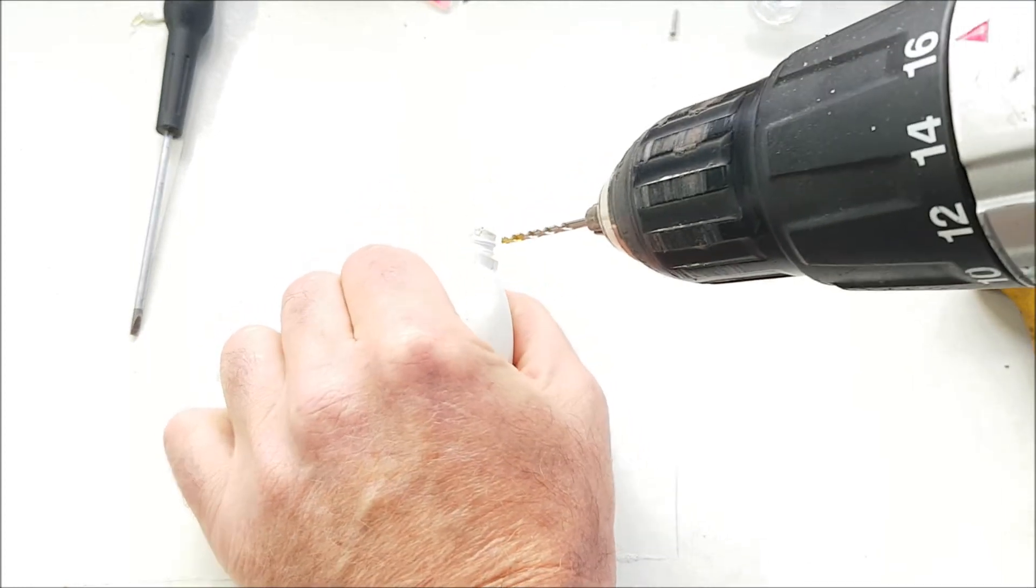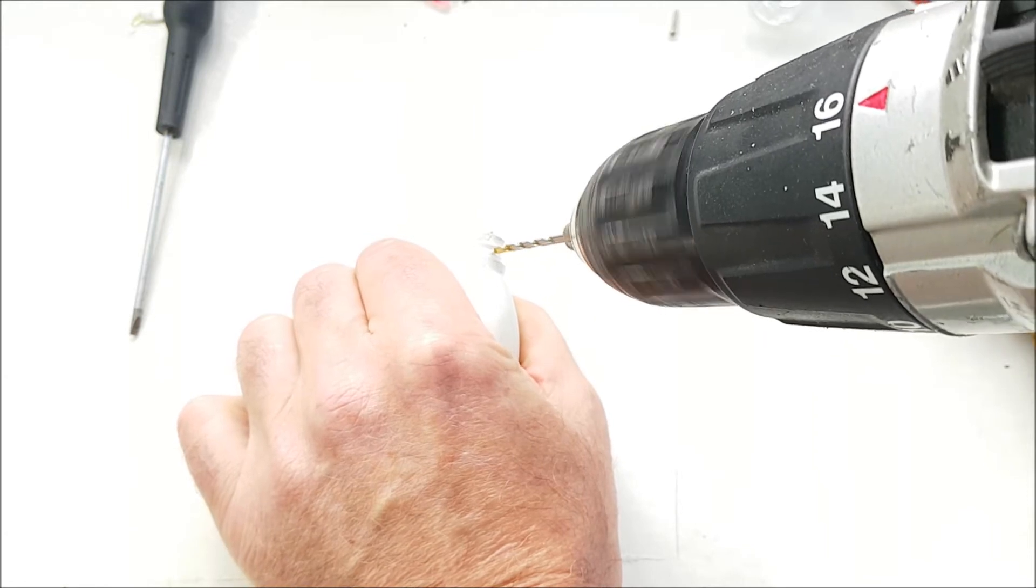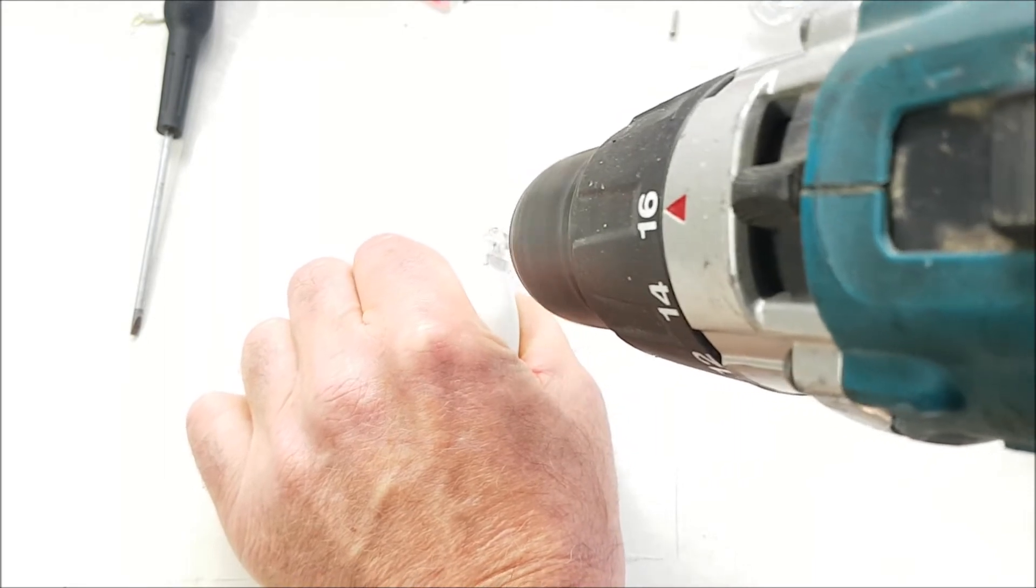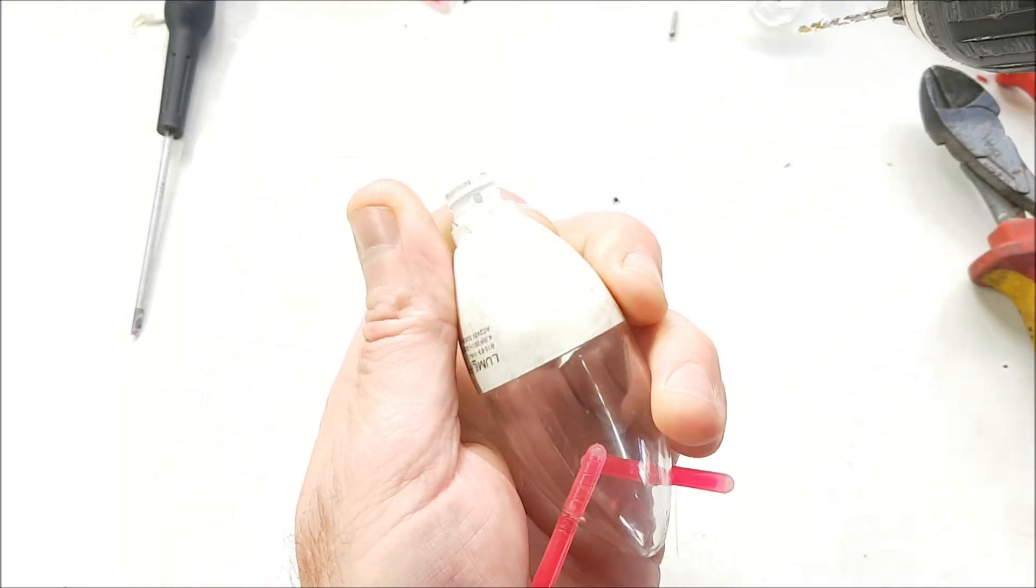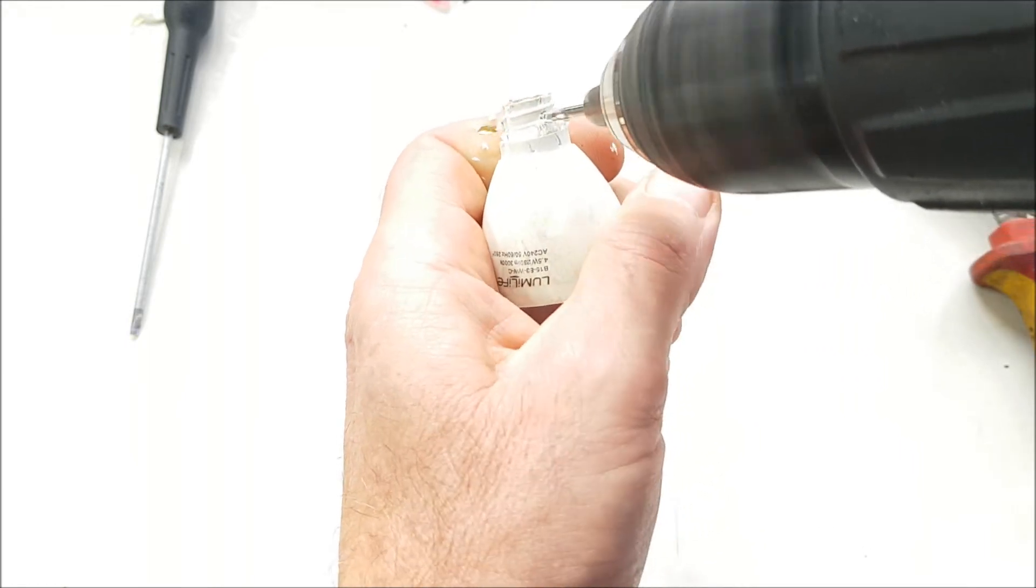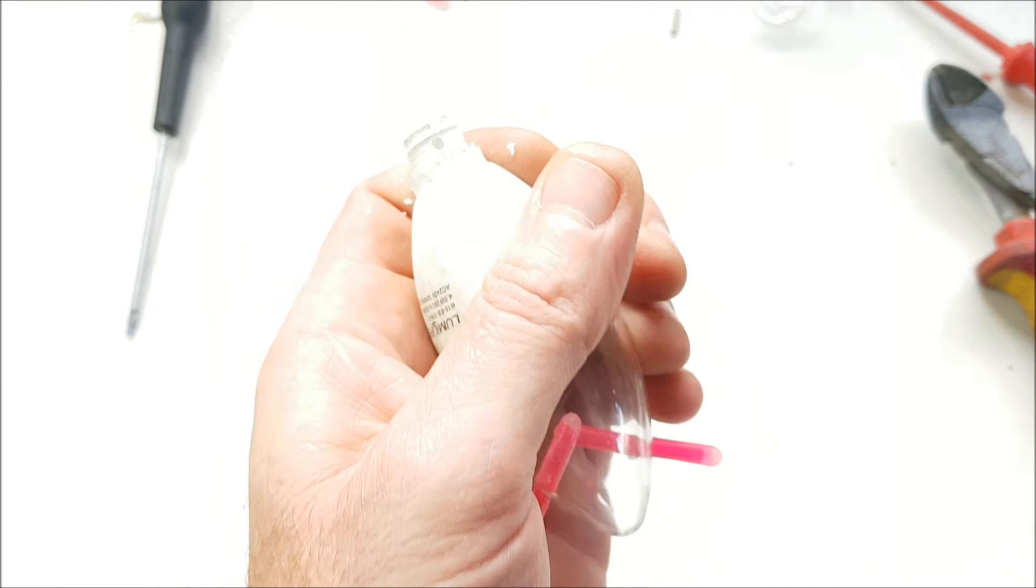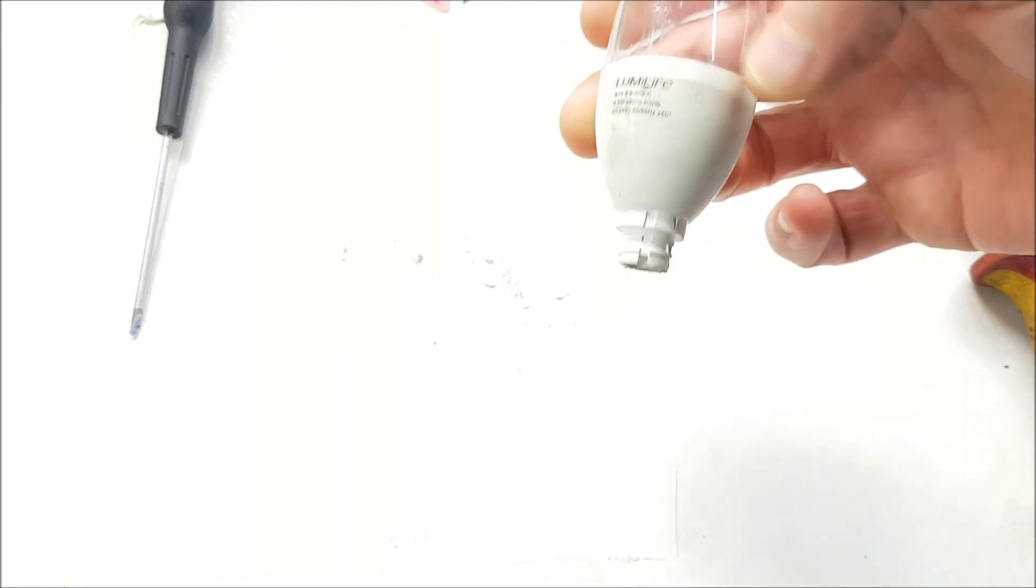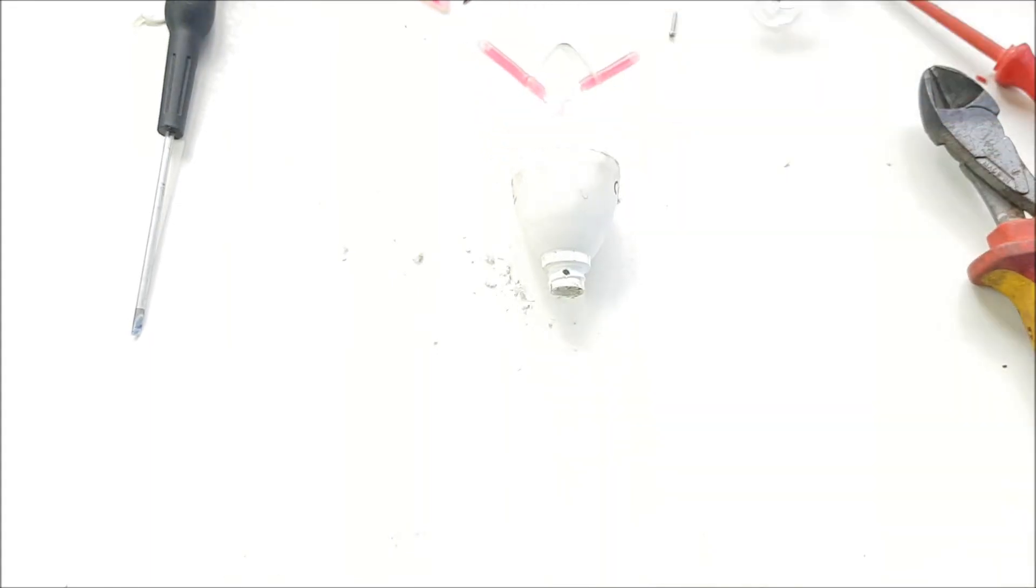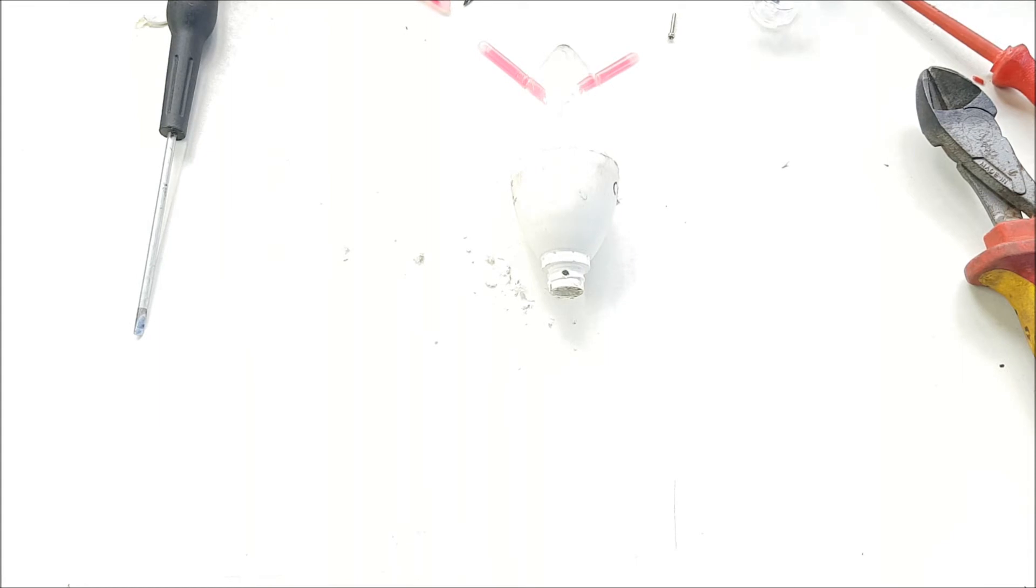Drill a hole in, drill through it now, both sides. There you have it—homemade bobber float.